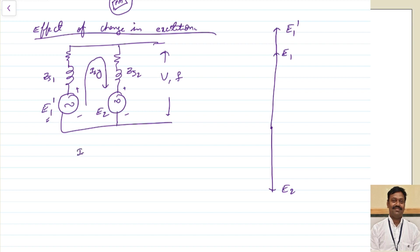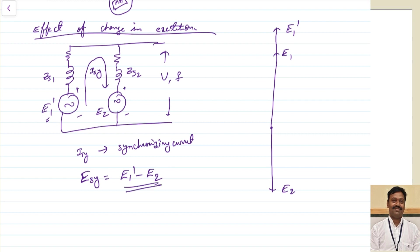The circulating current is given by the value of Isy - this is called the synchronizing current. This occurs because of the change in excitation or the increase in voltage. This Isy passes because of the voltage Esy, which is the difference of E1 dash minus E2. This is called the synchronizing voltage; because of the synchronizing voltage, the current passes.